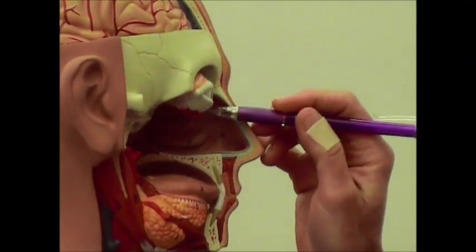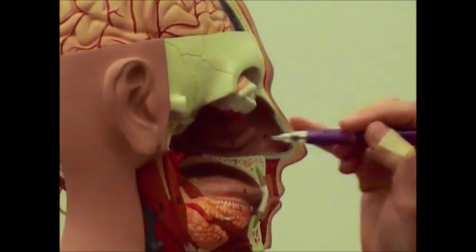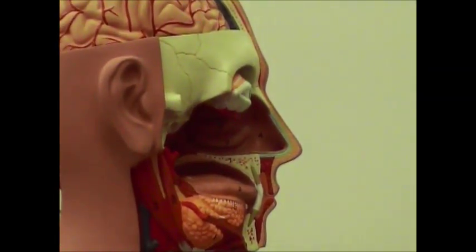If you'll notice inside the nasal cavity, you've got three bumps here, the nasal conchae: superior, middle, and inferior nasal conchae. Those bumps are designed to give you more surface area so that you can warm, moisten, and filter the air.